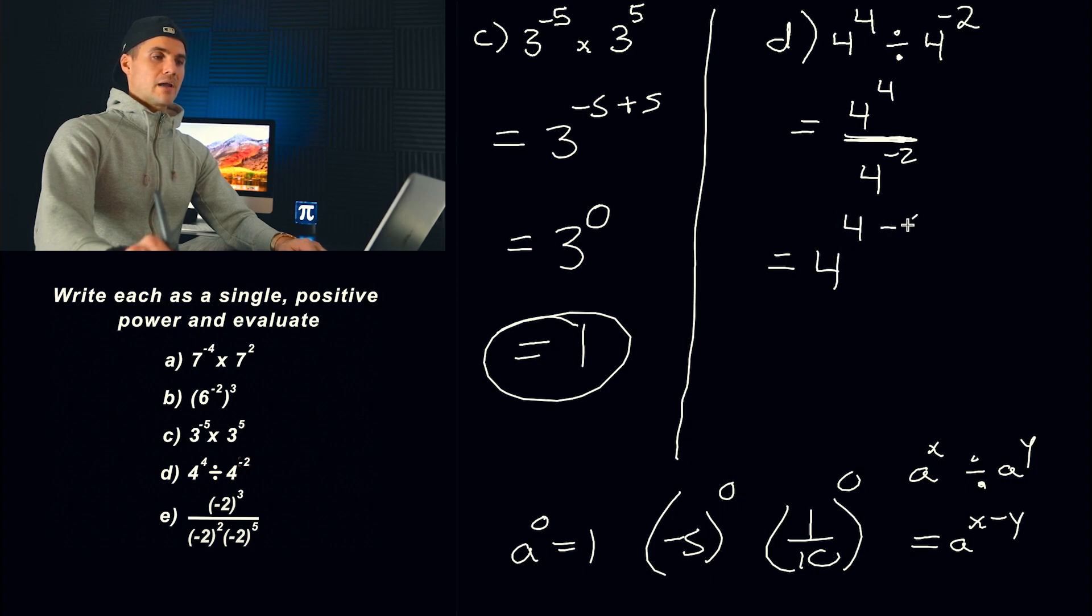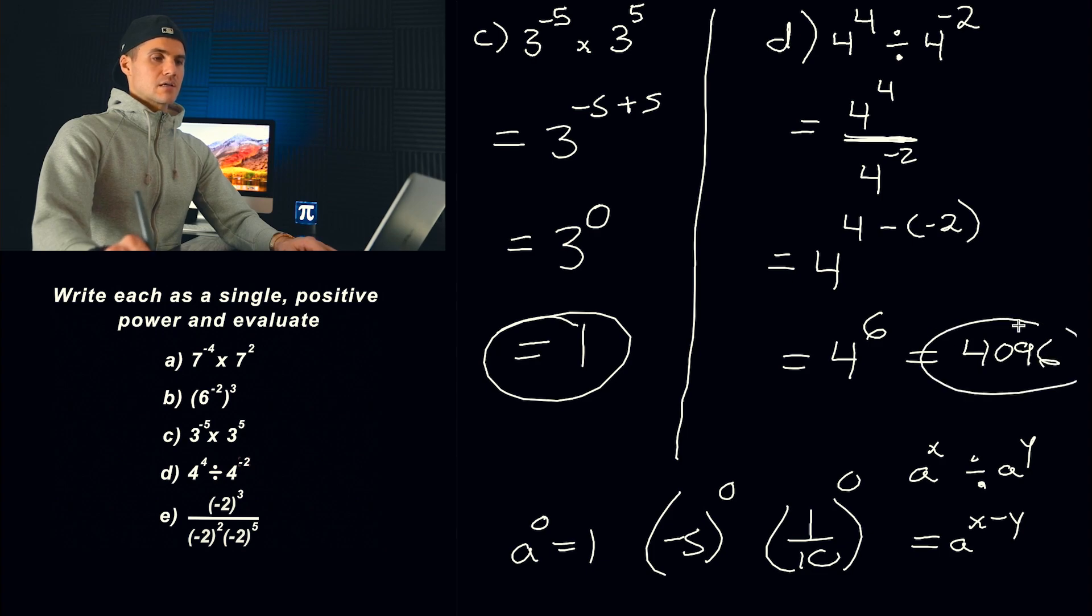Four minus negative two. And so this would end up being 4^6. And then 4^6, that would give us 4,096. So that ends up being the answer for part D.